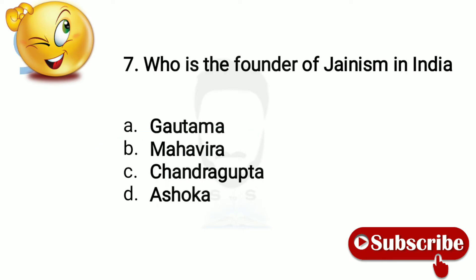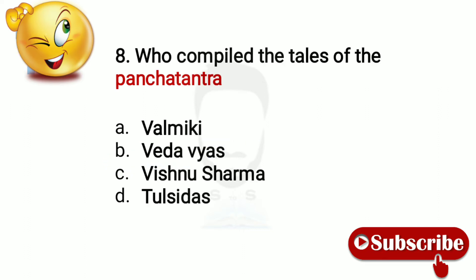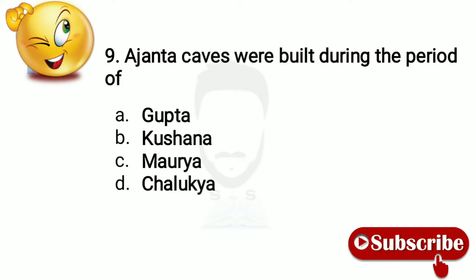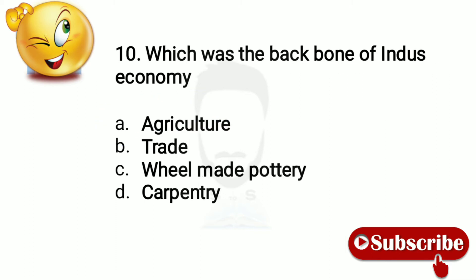Question 7: Who is the founder of Jainism in India? The answer is Mahavira. Question 8: Who compiled the tales of the Panchatantra? Option number C, Vishnu Sharma. Question 9: Ajanta caves were built during the period of? Option number A, Gupta. Question 10: Which was the backbone of India's economy? Agriculture.